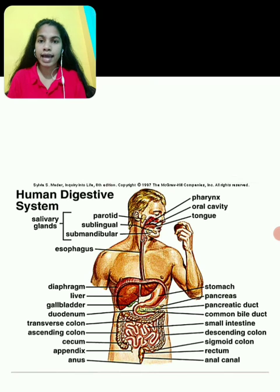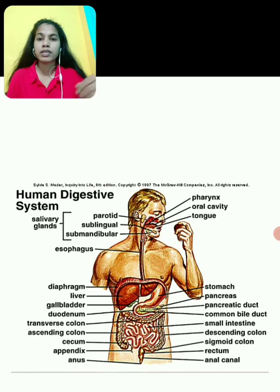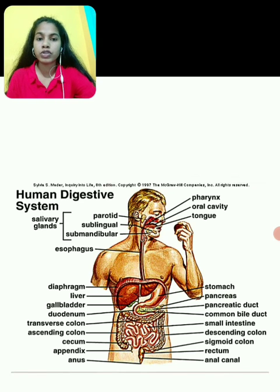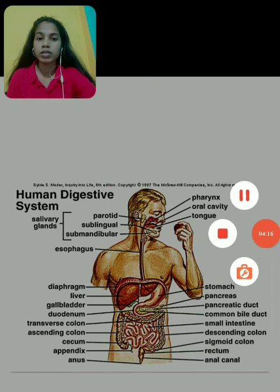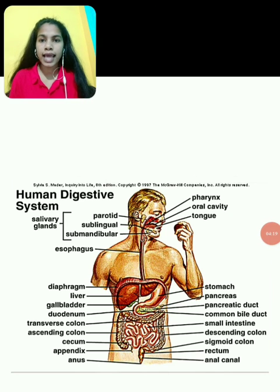The digestive glands include the salivary glands, gastric glands, pancreas, and liver. The liver is the largest gland of the human digestive system and plays a very vital role in digestion. That's all for today, thank you.